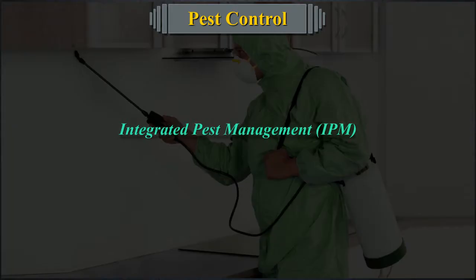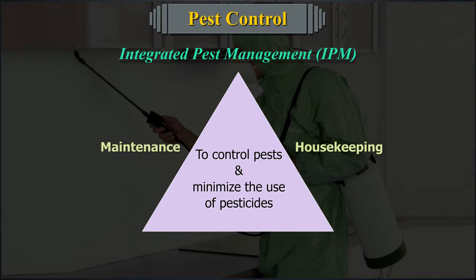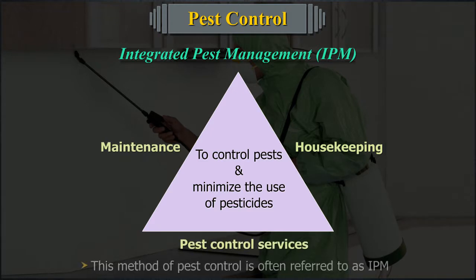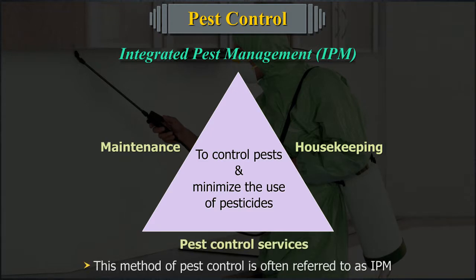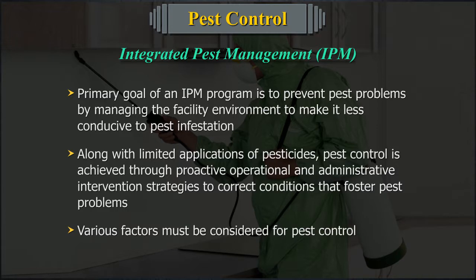Integrated Pest Management. To control pests and minimize the use of pesticides, it is necessary to employ a comprehensive program approach that integrates housekeeping, maintenance, and pest control services. This method of pest control is often referred to as IPM. The primary goal of an IPM program is to prevent pest problems by managing the facility environment to make it less conducive to pest infestation.